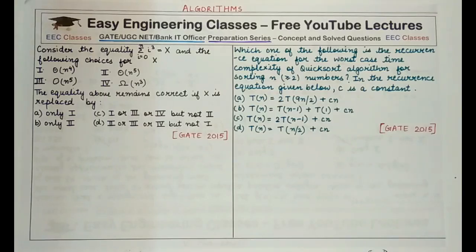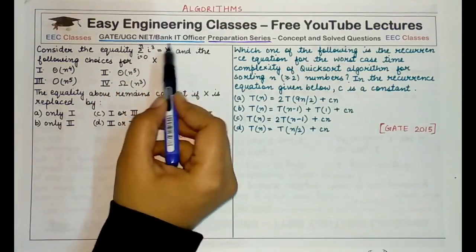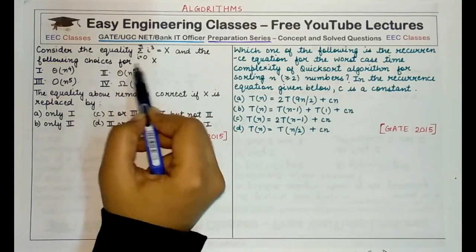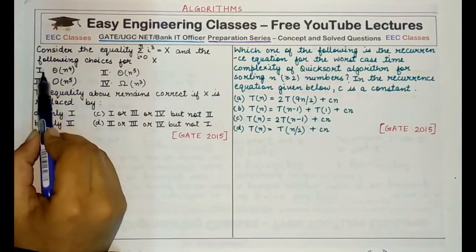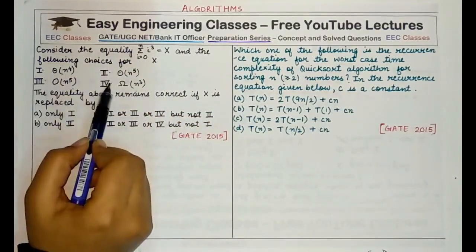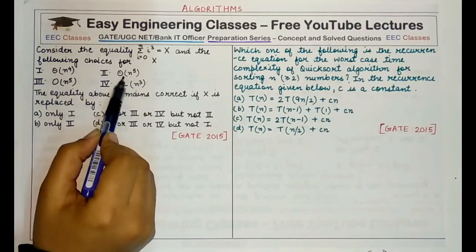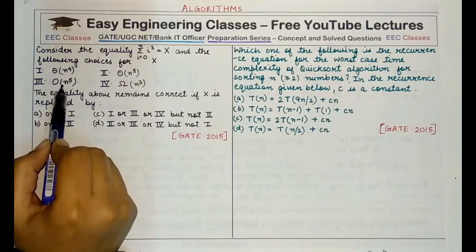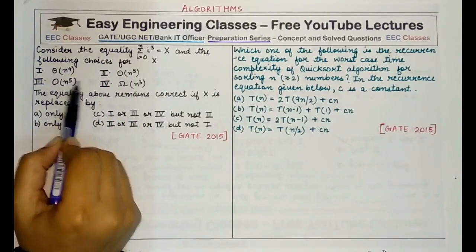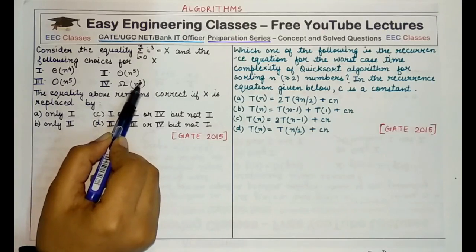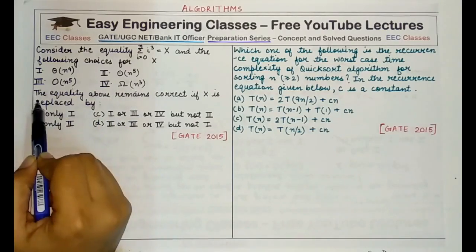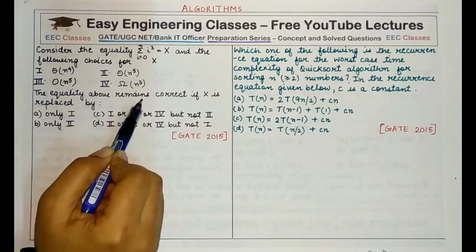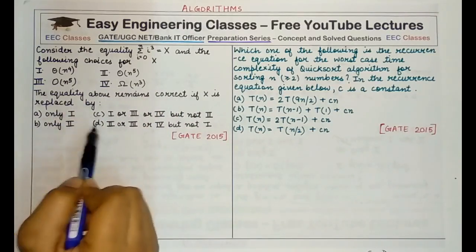The first question says to consider the equality: summation of i³, where i goes from 0 to n, equal to x. The four choices for x are: theta of n raised to power 4, theta of n raised to power 5, big O of n raised to power 5, and omega of n cube. The question asks which value x can be replaced by while keeping the equality correct.